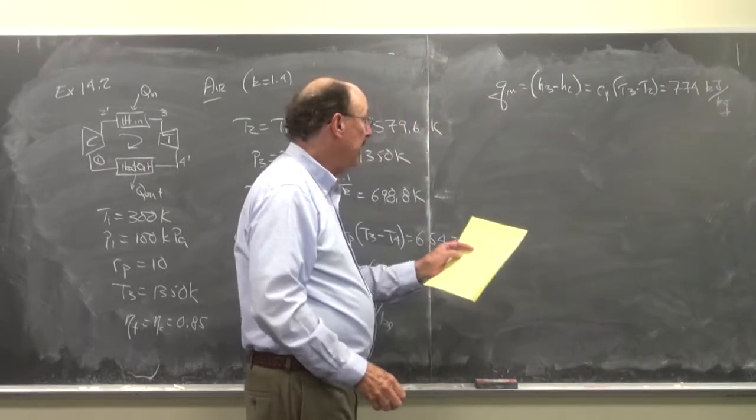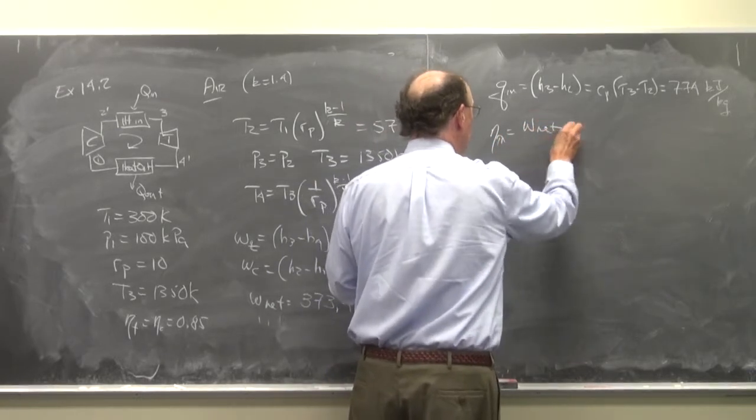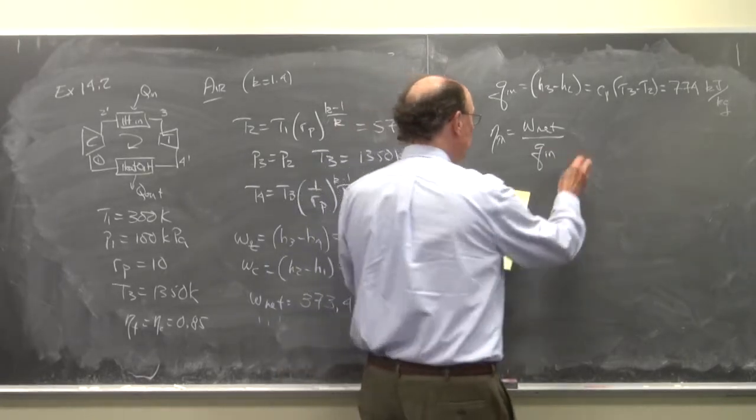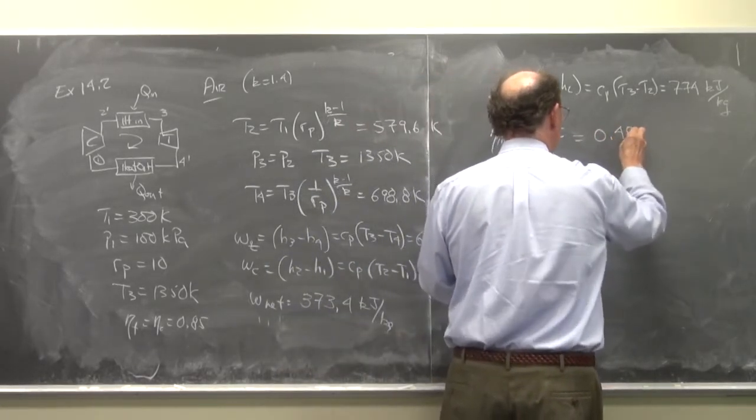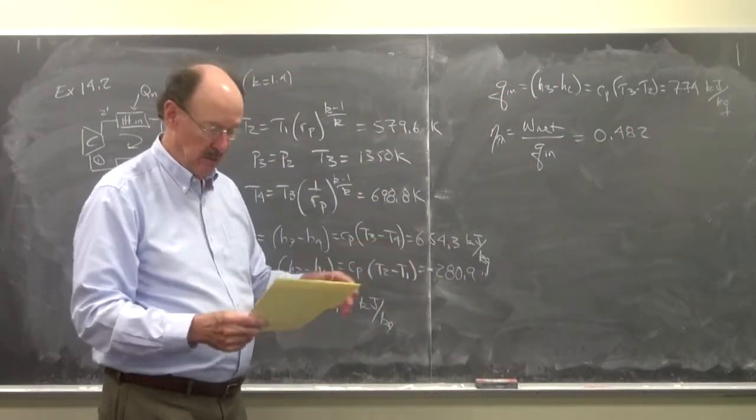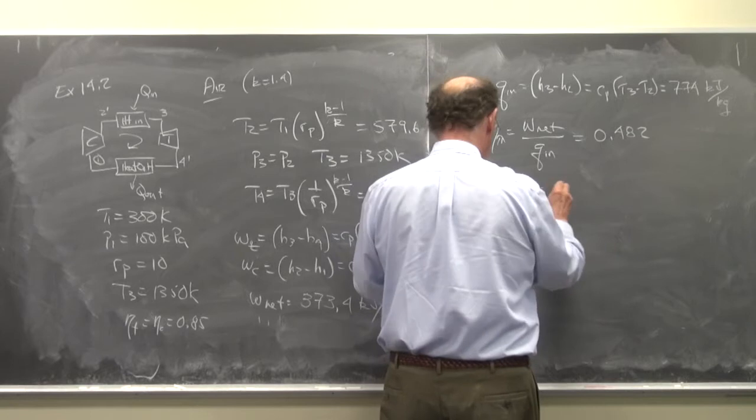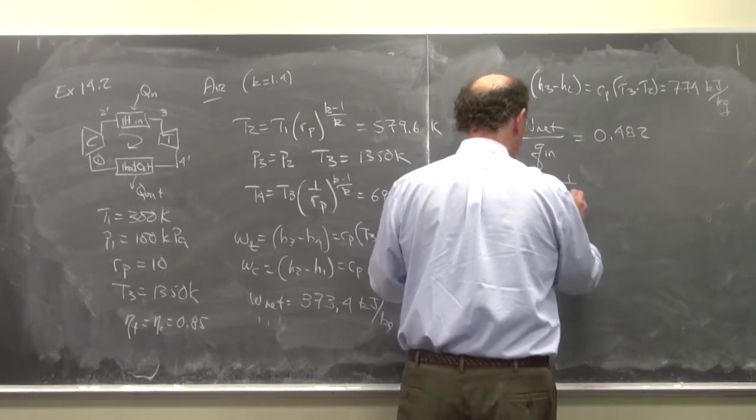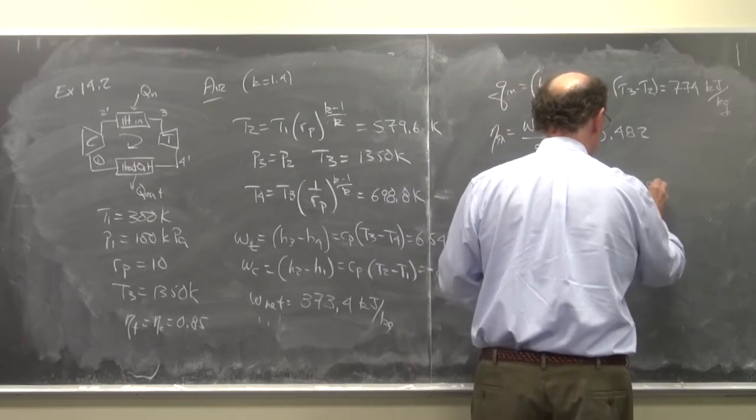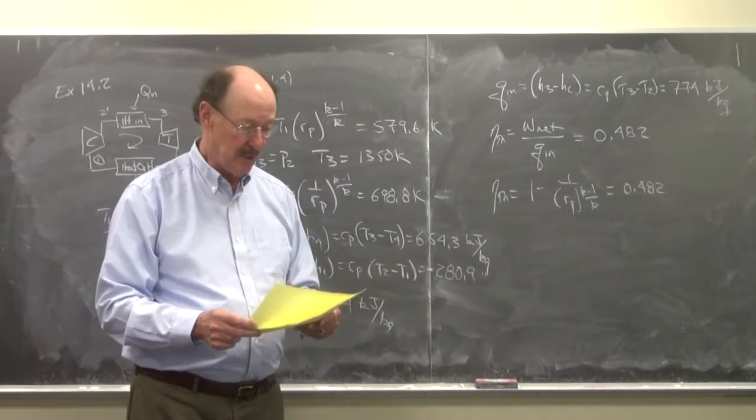We can do that and the thermal efficiency is w net over q in, is equal to 0.482. Because this is an air standard Brayton cycle, we could have also used that the thermal efficiency is equal to 1 minus 1 over r sub p to the k minus 1 over k, and if you do that you get 0.482 also. Obviously the thermal efficiency should not change based on how you do the calculations.